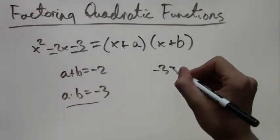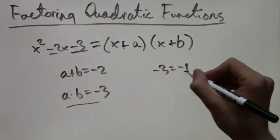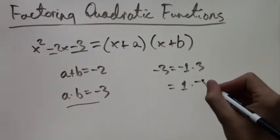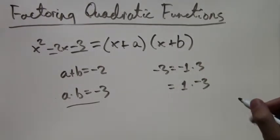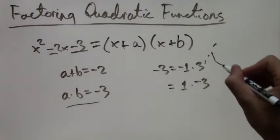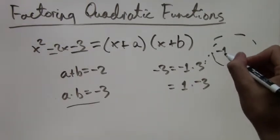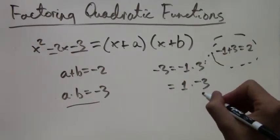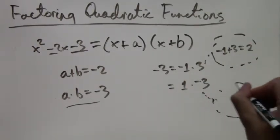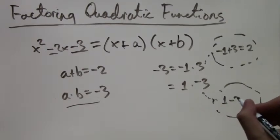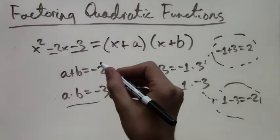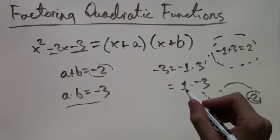So we'll look at what two numbers multiplied equal negative 3. We can have negative 1 times 3, or we can have 1 times negative 3. So now we check the sums. For this option, the sum would be negative 1 plus 3, which equals 2. But we want negative 2. So for the other option, we get 1 minus 3 equals negative 2. So this option must be the correct one, since negative 2 is what we wanted for the sum.